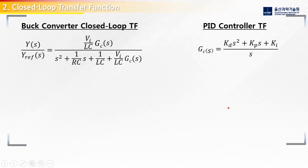Here is the transfer function for the closed loop system of a buck converter. Now we apply the transfer function for the PID controller. We do this by simply substituting our function here into our closed loop transfer function. So let's do this step by step.